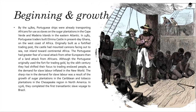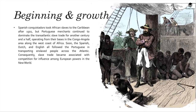The Portuguese had a greater fear of a naval attack from other Europeans than of a land attack from Africans. Although the Portuguese originally used the fort for trading gold, by the 16th century they shifted focus to trading enslaved people as demand for slave labor inflated in the new world. The sharp rise in demand was a result of the growth of sugar plantations in the Caribbean and tobacco plantations in the Chesapeake region in North America. In 1526 they completed the first transatlantic slave voyage to Brazil.